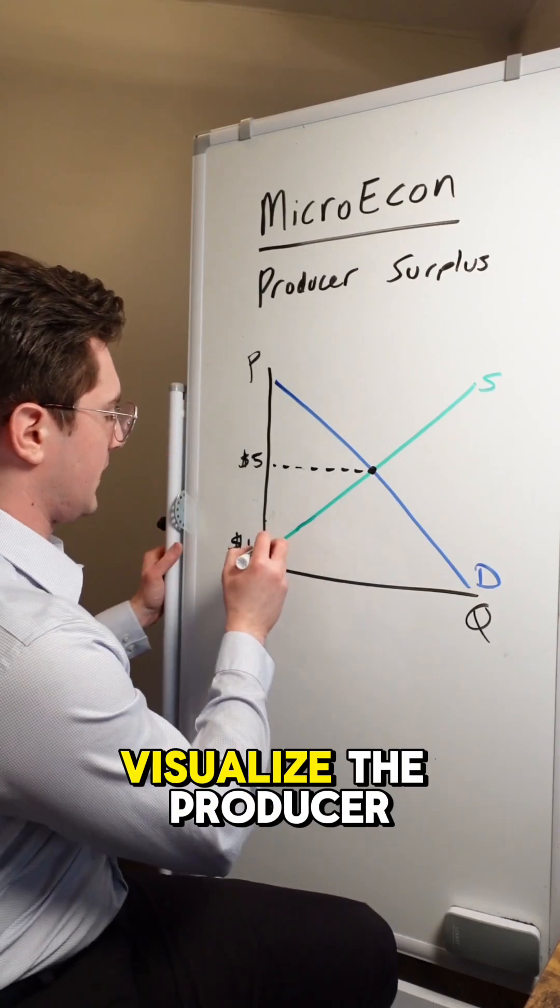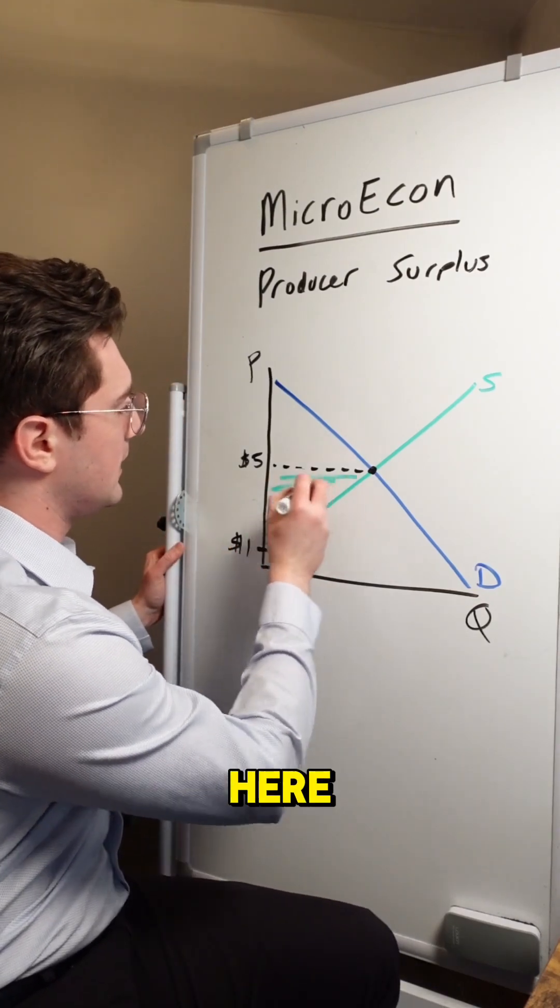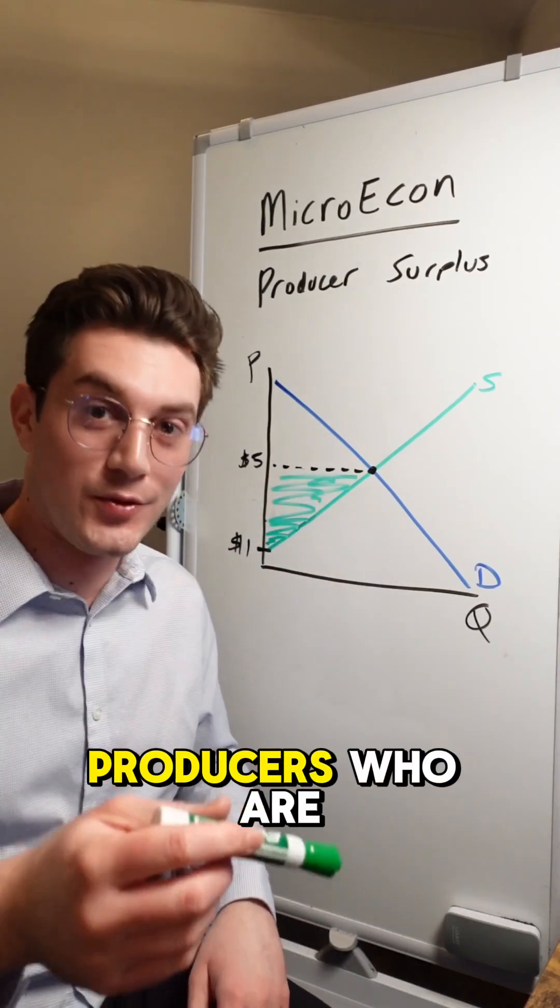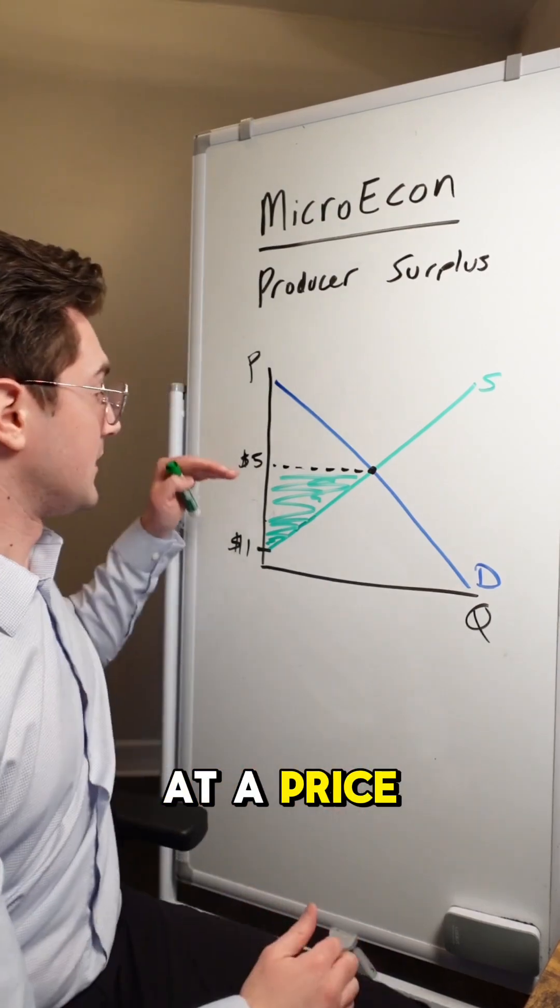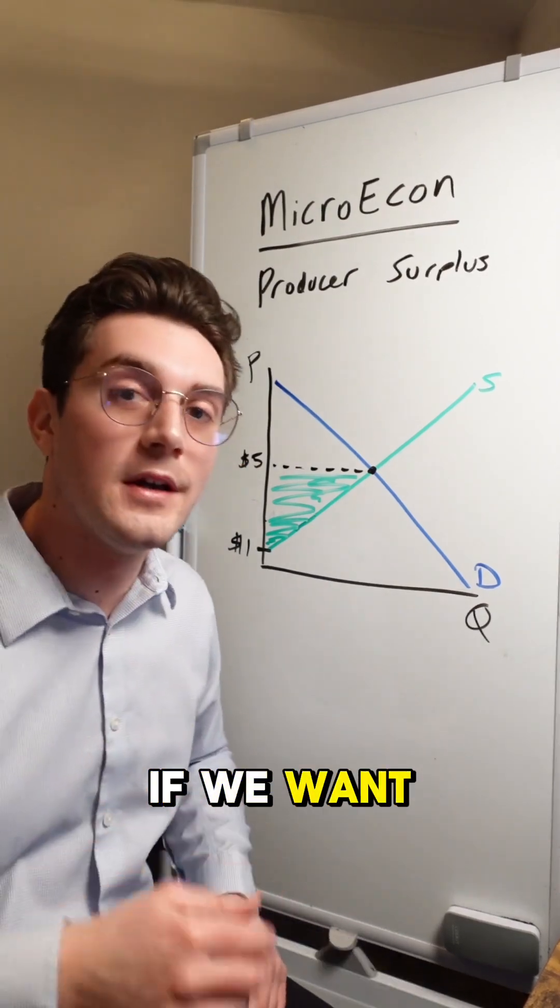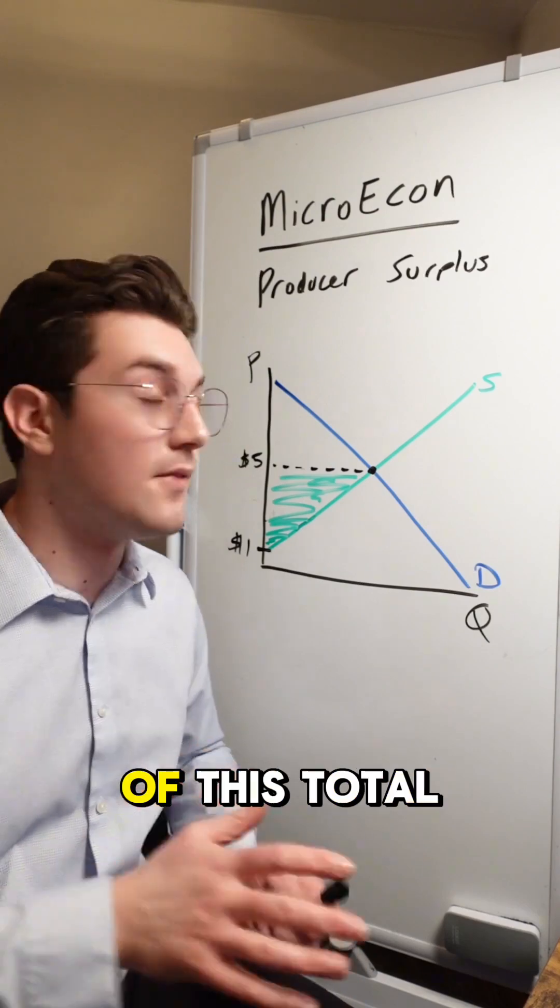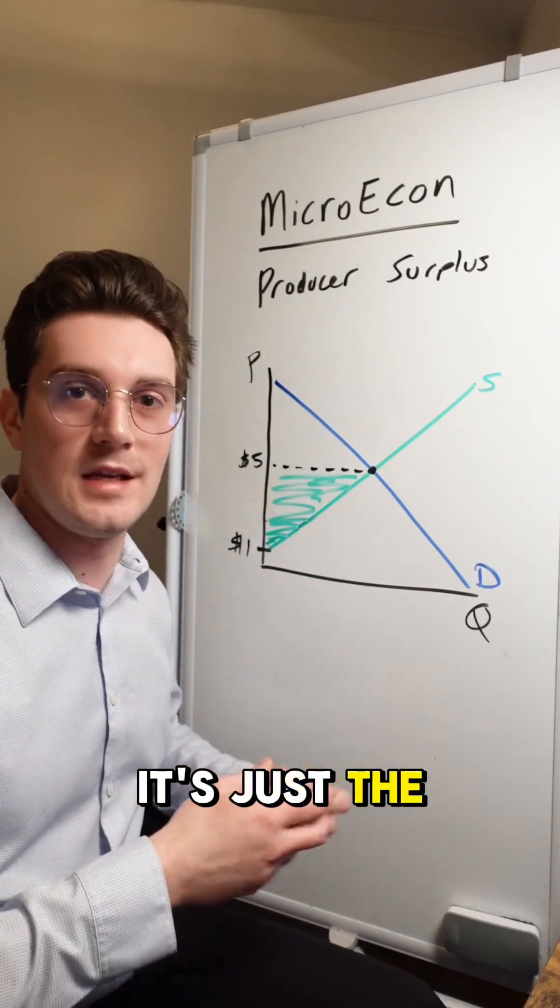From here, we're able to visualize the producer surplus triangle right here. This represents all producers who are willing to sell a hot dog at a price equal to or below the equilibrium. And if we want to calculate the actual dollar value of this total producer surplus, it's just the area of a triangle.